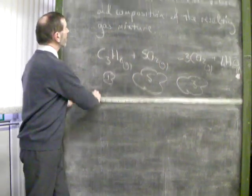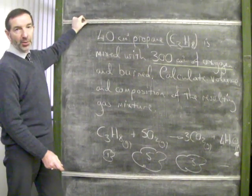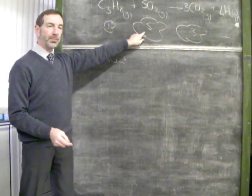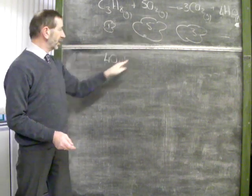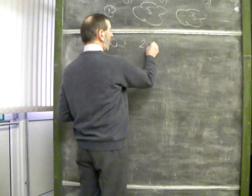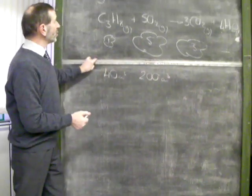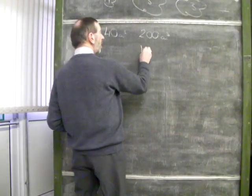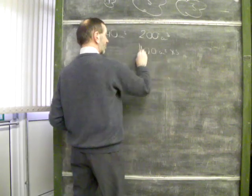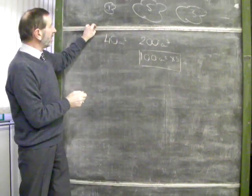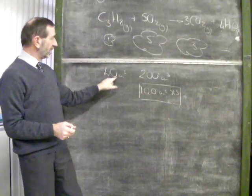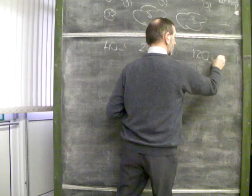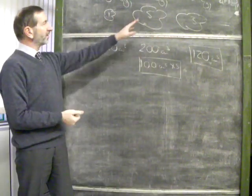Let's bring in the numbers. We have 40 cubic centimetres of propane and 300 cubic centimetres of oxygen. If I have 40 cubic centimetres of propane and look at the simple ratio, I need 5 times that volume of oxygen — 5 times 40 — I need 200 cubic centimetres of oxygen. However, according to the question I have 300 cubic centimetres of oxygen, which means there's an excess of 100 cubic centimetres of oxygen. Sticking to the ratio, 3 times 40 gives 120 cubic centimetres of carbon dioxide produced.